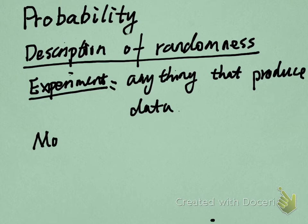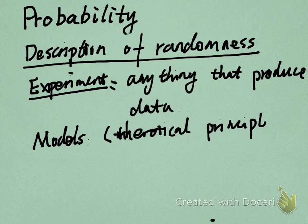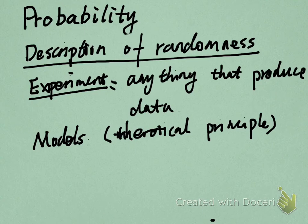We always need to analyze the outcomes of the data. So here, we will need some models. In probabilities, we generally talk about models based on some theoretical principles. We can use these models as a method to analyze the outcomes. This is what can help us classify the information and the outcomes, and to get some conclusions easily.